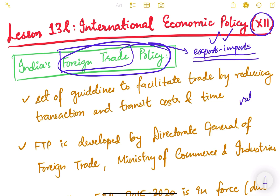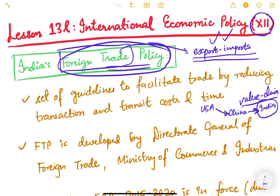In order to be part of the global value chain — meaning the manufacturing process through which value is added at every step — for example, in automobile manufacturing, some components are made in the USA, imported to China where value is added, then sent to India where final assembly is done. To be part of this value chain, we need a good foreign trade policy, because many inputs and components used in manufacturing are imported, and we also export the final goods.